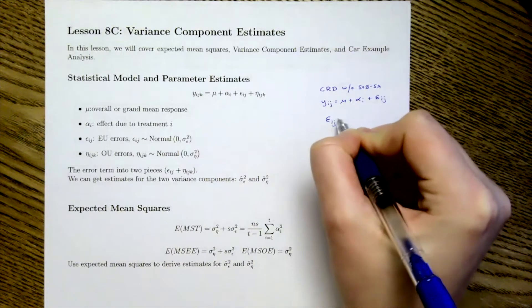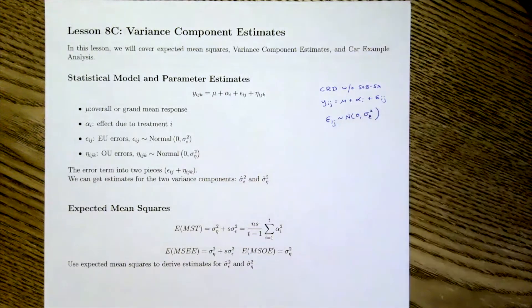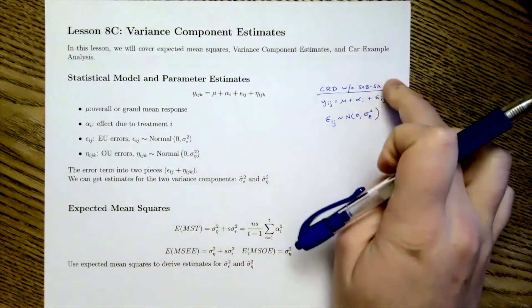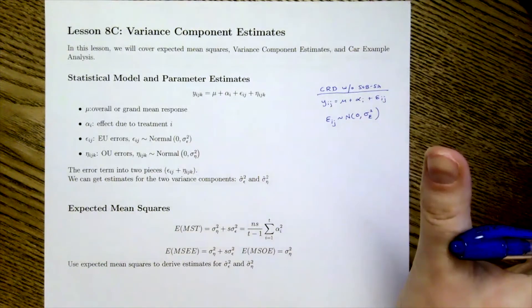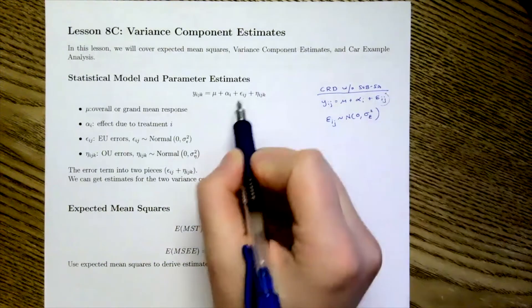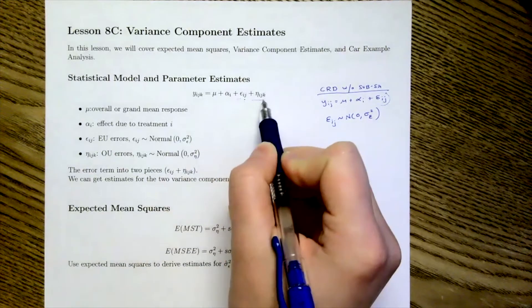...our epsilon_ij was a normal zero sigma squared epsilon. So this was our CRD that we learned about in lesson two, where we had no subsampling. With subsampling, we took this error term and we broke it up into our experimental unit error and our observational unit error.